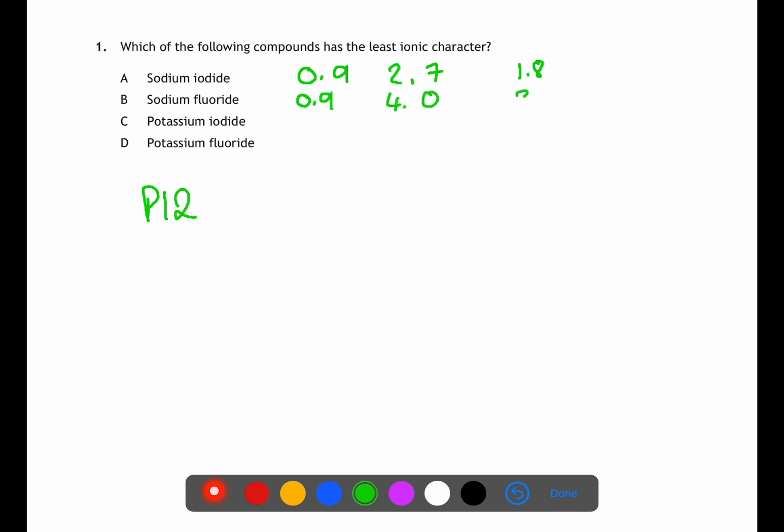Sodium has an electronegativity of 0.9 and iodine has an electronegativity of 2.7. Potassium has an electronegativity of 0.8 and fluorine has an electronegativity of 4.0. This means that the smallest difference in electronegativity is between sodium and iodide making A your answer.